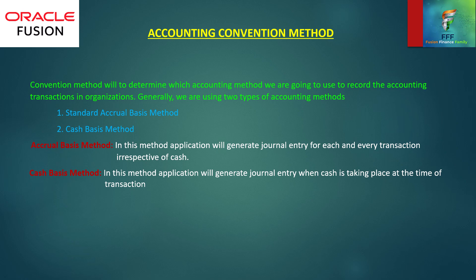This is the fourth C of the primary ledger. Already we have discussed currency, calendar, and chart of accounts. This is the convention method — that is, the accounting convention method. Thank you.